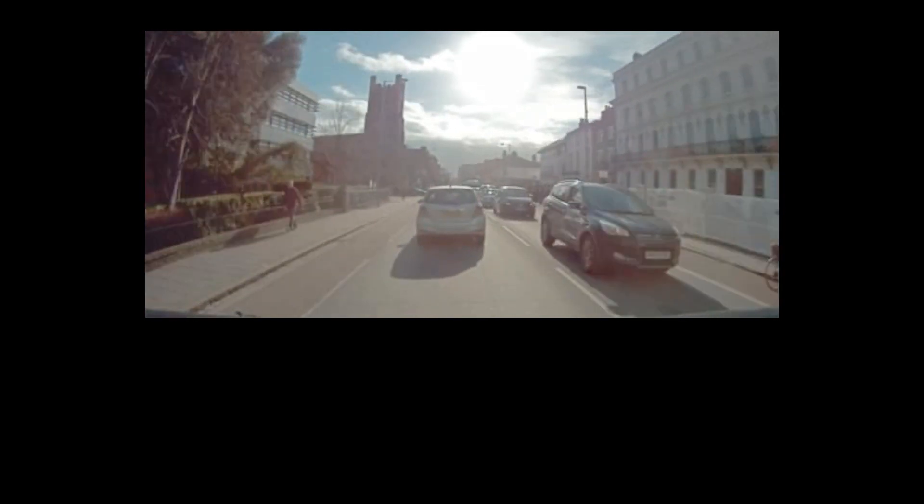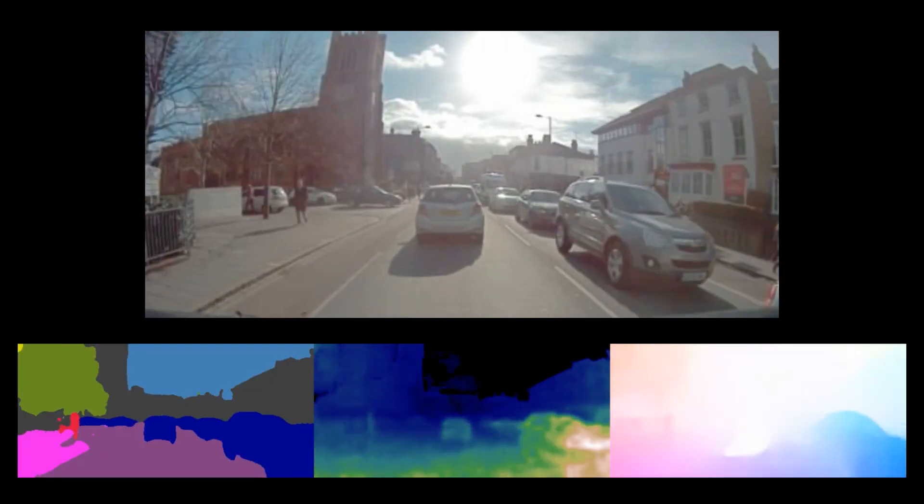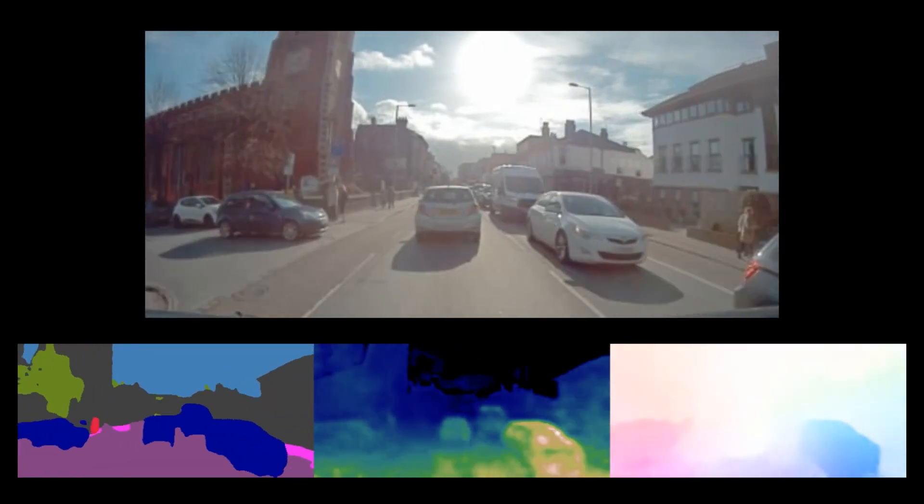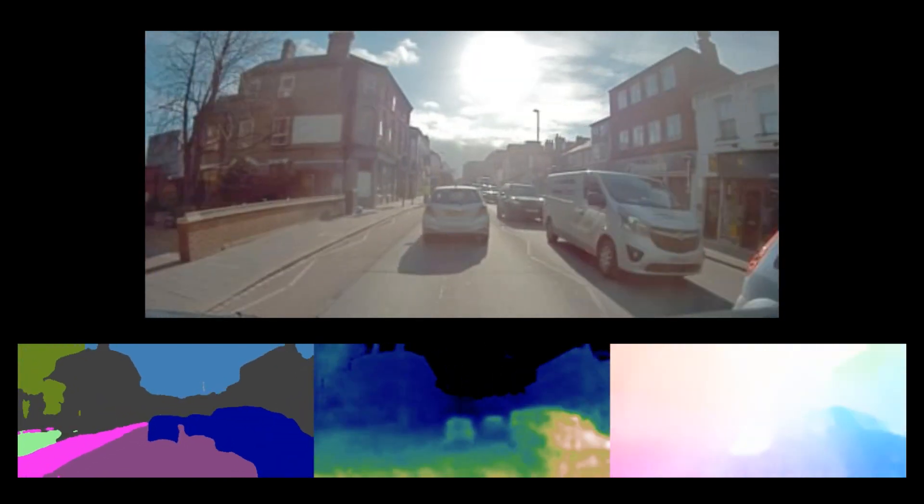We present a novel deep learning architecture for probabilistic future prediction from video. We predict the future semantics, depth and flow of complex real-world urban scenes and use its representation to control an autonomous vehicle.